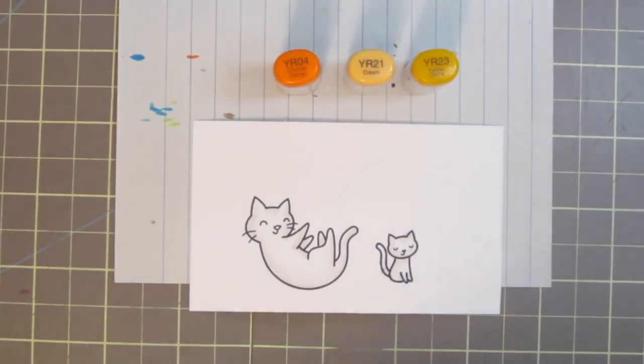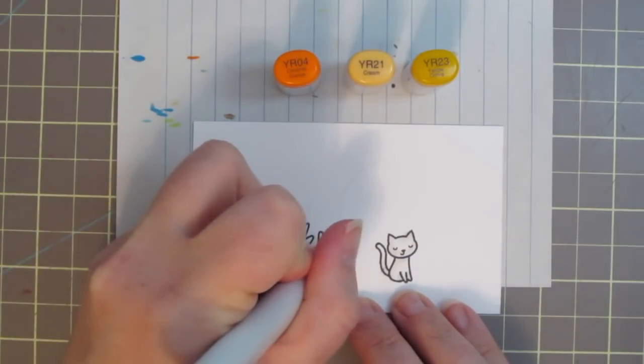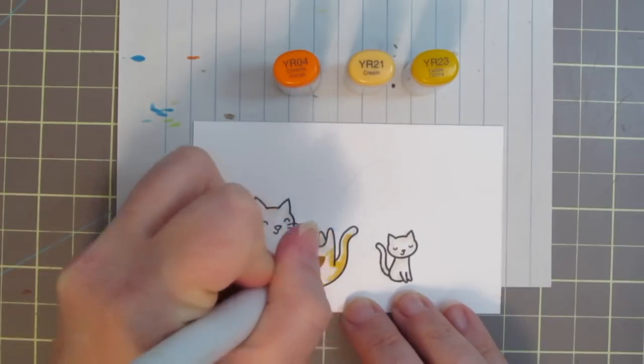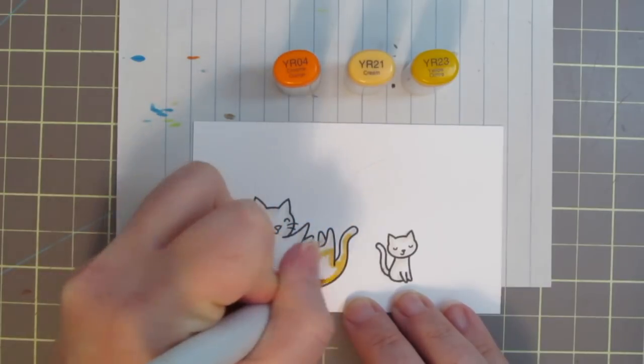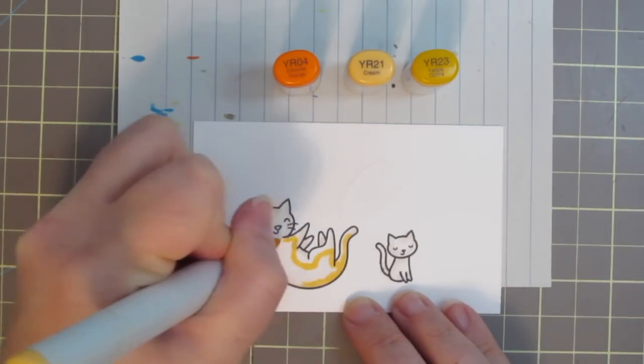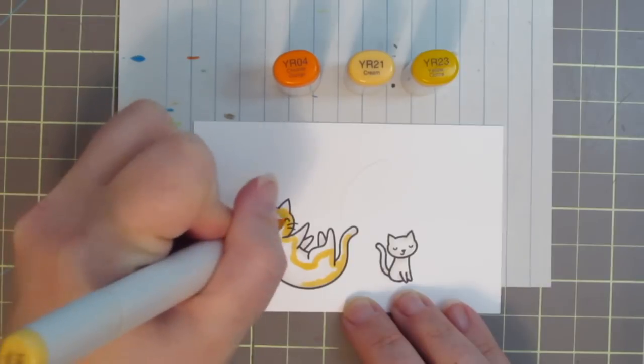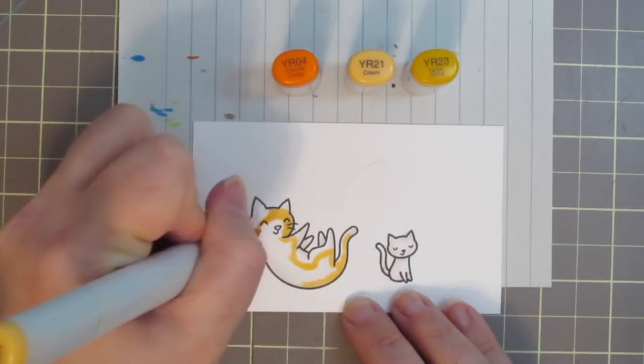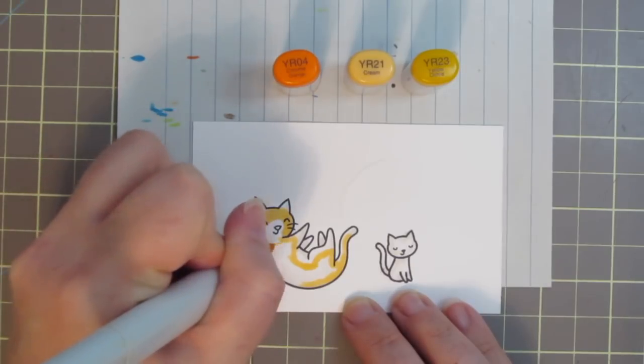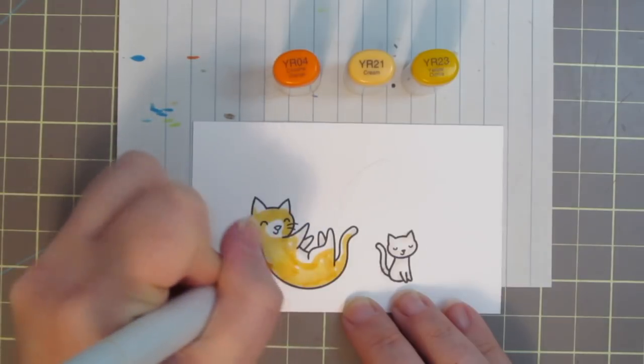I'm going to be creating some orange marmalade cats, since those are my favorite. So I'll be using YR04, YR21, and YR23 for that part of their bodies. I'm just starting with that YR21 and kind of outlining where I want that color to be. I want to leave the feet and part of the face white. So I'm just drawing that in with my lightest shade, and then I can go ahead and fill in the portion that I want to be orange.